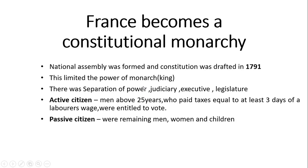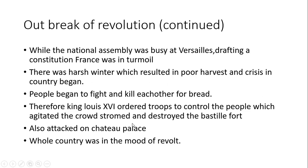The monarch — that is, the king — had limited powers. There was a separation of powers: Judiciary, Executive, and Legislature. There were active citizens and passive citizens. Active citizens were men above 25 years who paid tax equal to at least 3 days of a labourer's wage, and they were entitled to vote. Passive citizens were the remaining men and women.